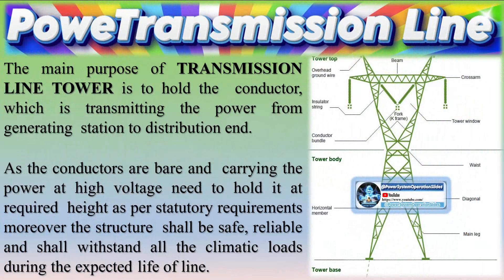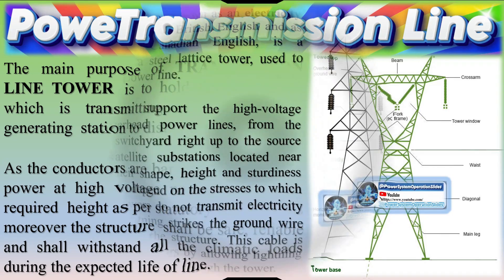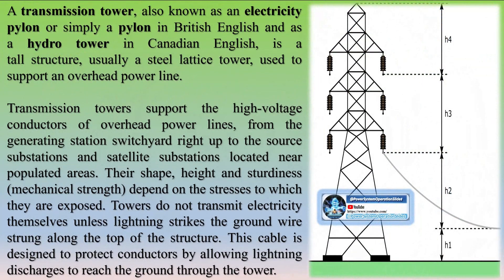The main purpose of a transmission line tower is to hold the conductor, which transmits power from the generating station to the distribution end. As the conductors are bare and carry power at high voltage, they need to be held at the required height as per statutory requirements. Moreover, the structure shall be safe, reliable, and shall withstand all climatic loads during the expected life of the line.